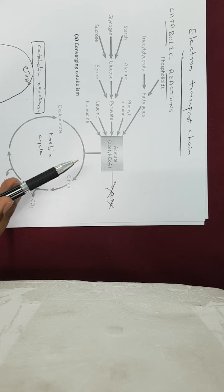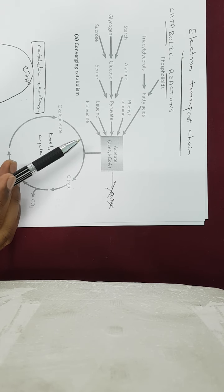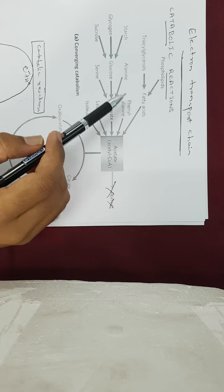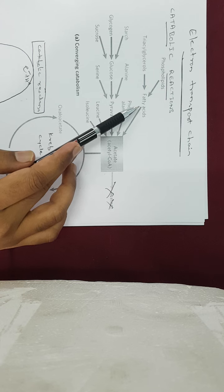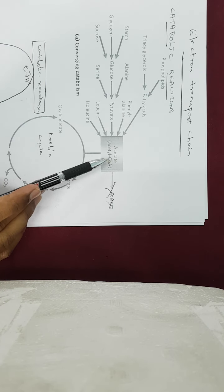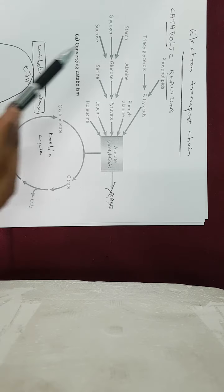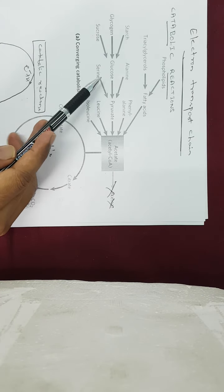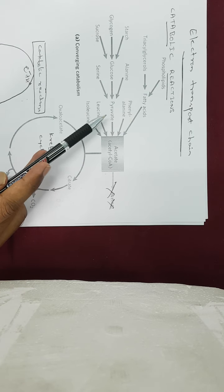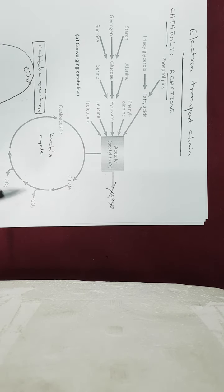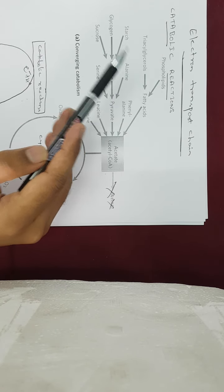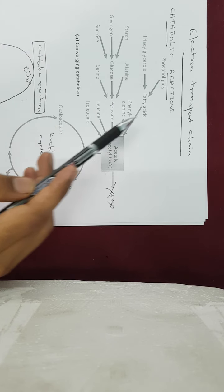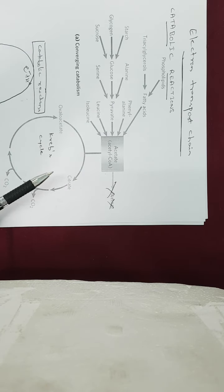How do these catabolic reactions provide energy to the cells? Fats such as phospholipids and triacylglycerols will be converted into fatty acids, and these fatty acids will be converted into acetyl-CoA, which enters the Krebs cycle. Carbohydrates will be converted into simple sugars, then into pyruvate, then into acetyl-CoA, which also enters the Krebs cycle. Proteins will be digested into simple amino acids, which in one or another way also enter the Krebs cycle and ultimately provide energy to the cells.